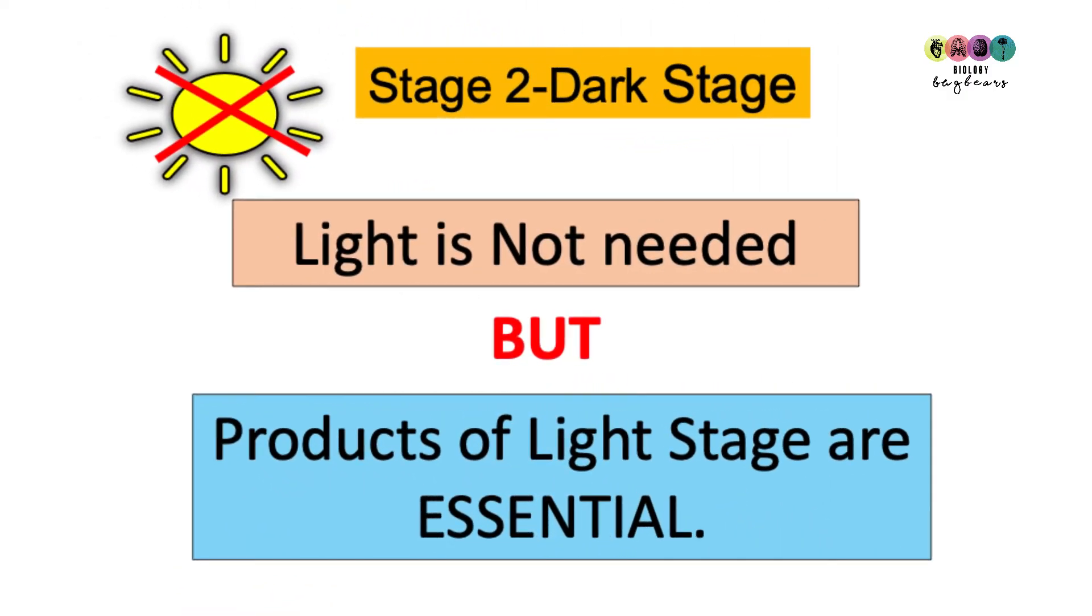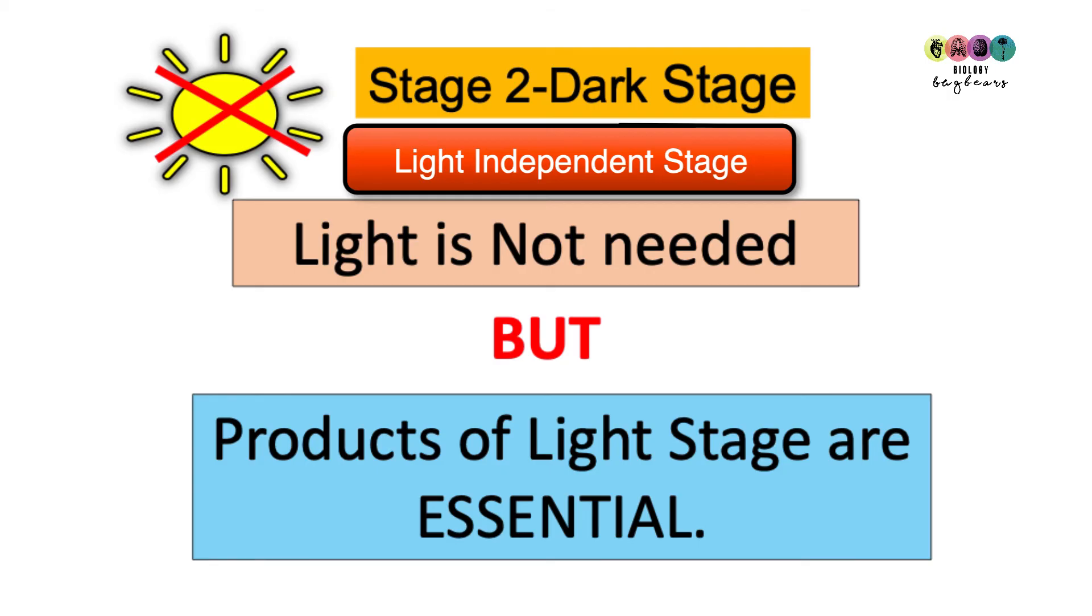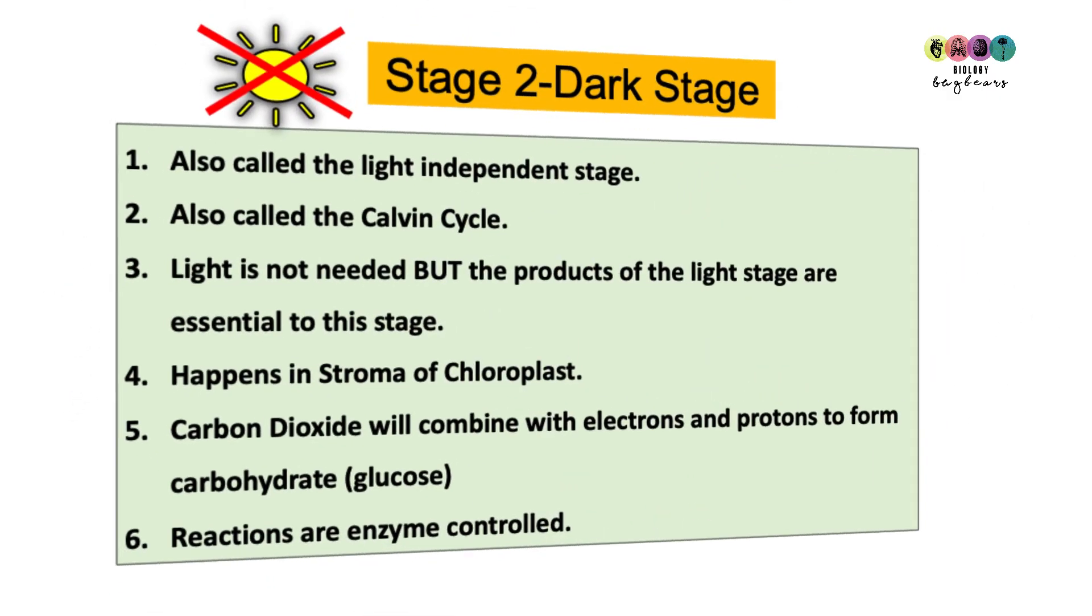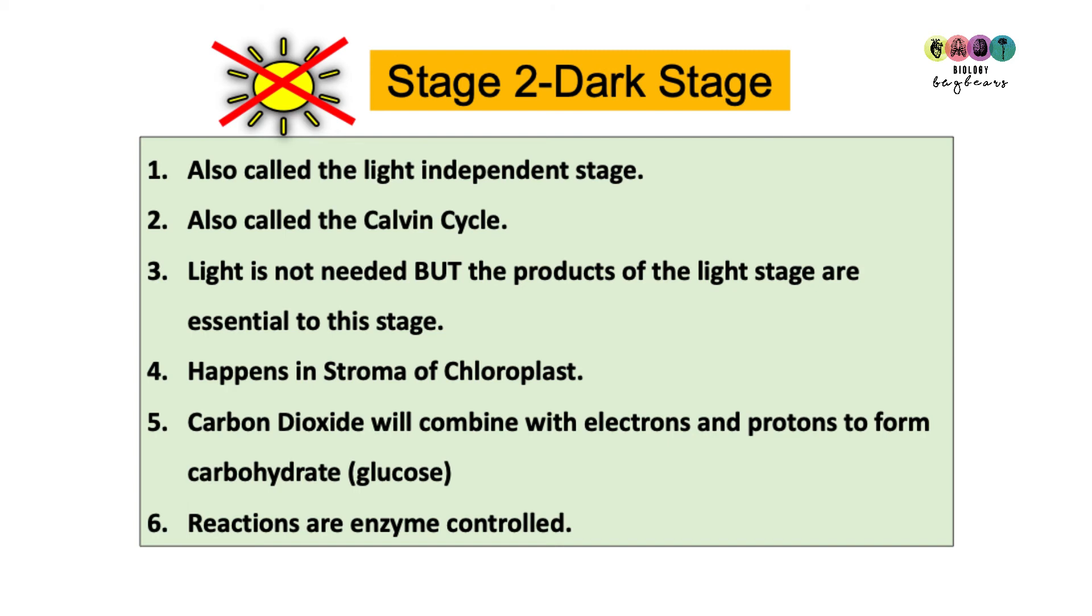Let's go on to the dark stage or stage two reactions. This is sometimes called the light independent stage because light is not needed, but the products of the light stage are essential. We need the ATP and the NADPH because it's bringing effectively the electrons and the protons, which really are hydrogen. It's also called the Calvin cycle. These reactions take place in the stroma of the chloroplast, which is the liquid part of the chloroplast.